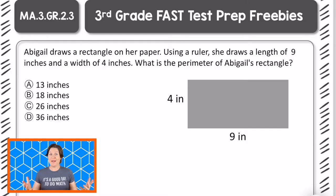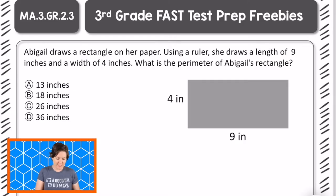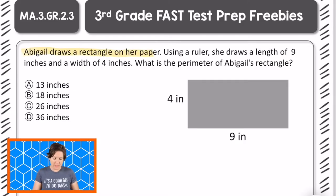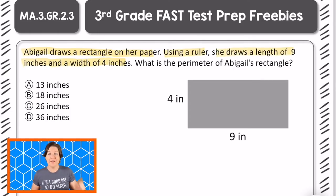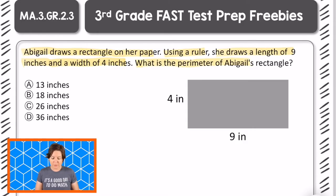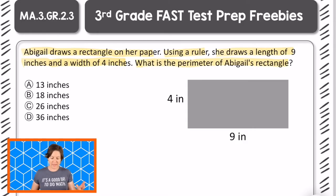Welcome back, 3rd grade. Let's go over this one. So it says that Abigail draws a rectangle on her paper. Using a ruler, she draws a length of 9 inches and a width of 4 inches. What is the perimeter of Abigail's rectangle?